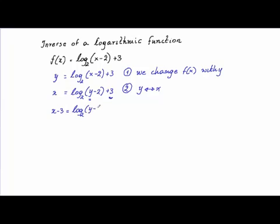Why do we do that? Remember, our goal after step three is to isolate the y. In order to do that, we need to perform all operations in the order of PEMDAS. The first thing is to get rid of the 3 from the right side of the equation, in order to leave the logarithm by itself. Now on one side we have just the log, and on the other side we have x minus 3.